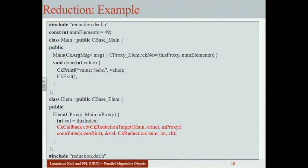For custom reductions, you define what the commutative associative operator is and what the identity (zero) element of that group is — everything else is handled by the system. For a three-dimensional chare array, everyone contributes and there is no distinction by dimension — all contributions go together. Sections (subsets of a collection) allow partial reductions, but we'll leave that for later.